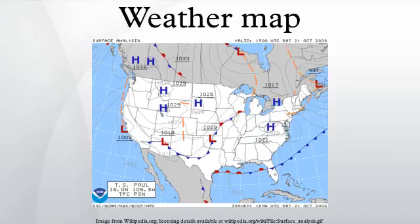A station model is a symbolic illustration showing the weather occurring at a given reporting station. Meteorologists created the station model to plot a number of weather elements in a small space on weather maps. Maps filled with dense station model plots can be difficult to read, but they allow meteorologists, pilots, and mariners to see important weather patterns. A computer draws a station model for each observation location. The station model is primarily used on surface weather maps, but can also be used to show the weather aloft.